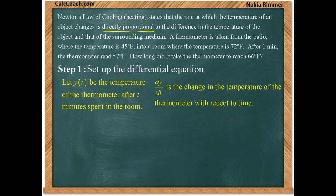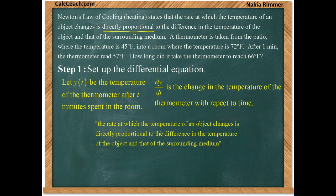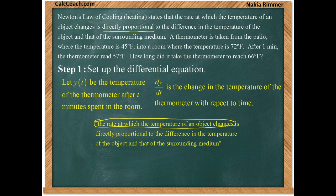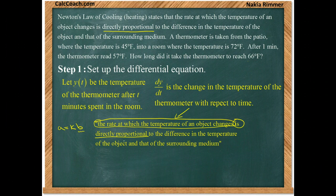Then the derivative, how this function changes, is what we're interested in. dy/dt is the change of temperature of the thermometer with respect to time. When the problem reads 'the rate at which the temperature of an object changes,' that derivative dy/dt is directly proportional. When something is directly proportional to something else, if A is directly proportional to B, then you can write A as some constant K times B.